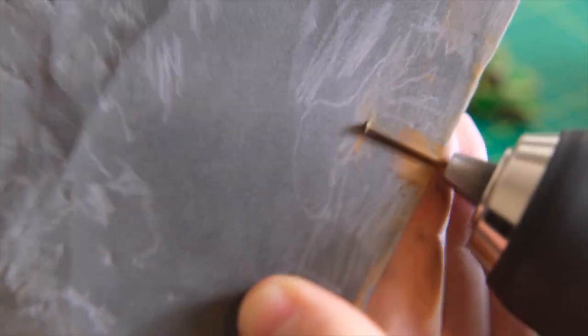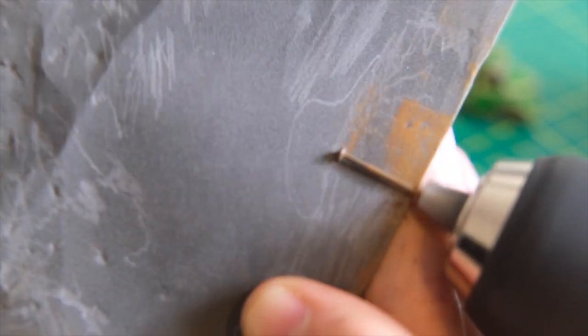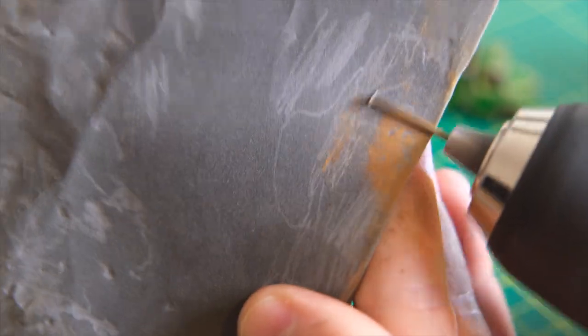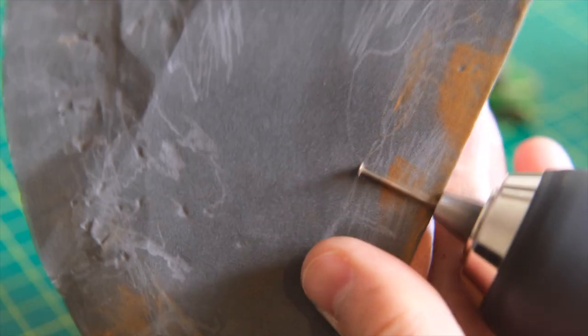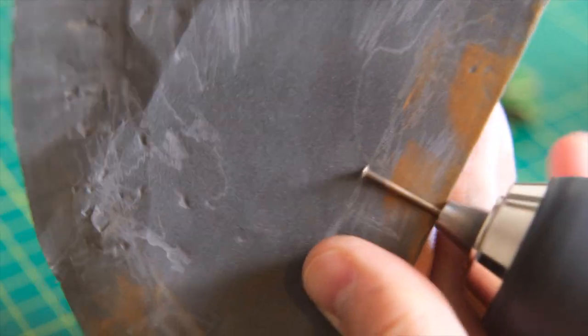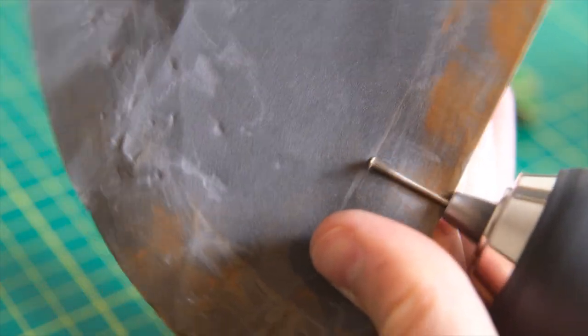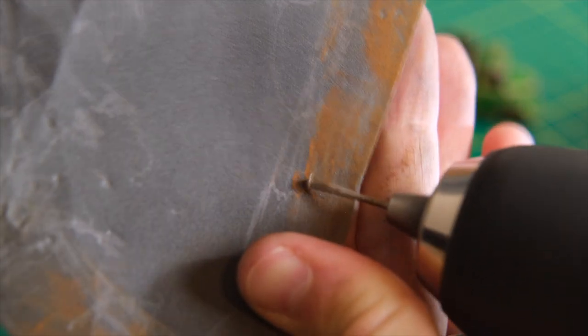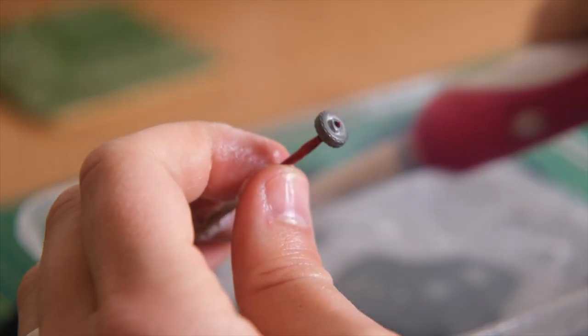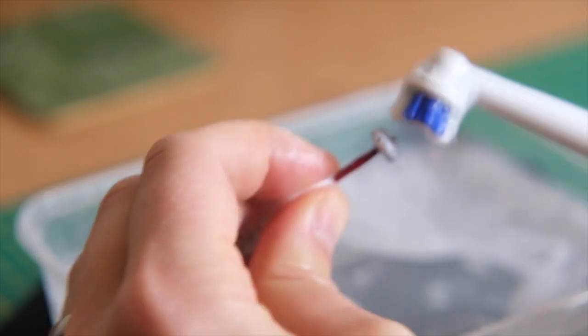Next I move on to removing the surface rust from both sets of axles. I do this by placing them inside my battery drill and buffing against some fine grit sandpaper. Then each of the metal wheels is cleaned up in some warm soapy water.